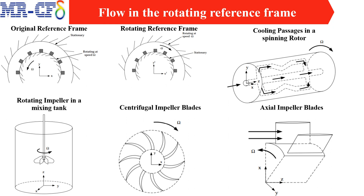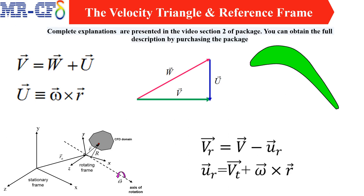When you create a model using Fluent, you are typically modeling flow in an inertial reference frame — a non-accelerating coordinate system. However, Fluent also has the ability to model flows in an accelerating reference frame, where the acceleration of the coordinate system is included in the equations of motion. A common example of an accelerating reference frame in engineering applications is flow in rotating equipment. Fluent allows you to solve rotating frame problems using either absolute velocity or relative velocity as the dependent variable.